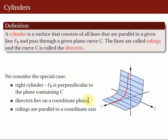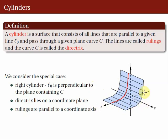In the following discussion, we only consider cases satisfying these conditions. First, the directrix lies on a coordinate plane. In this figure, the red curve lies on the xz coordinate plane. Another condition is that L0 is perpendicular to the plane containing C. L0 in this picture is the y-axis, and it is perpendicular to the xz plane which contains the directrix. If this condition is satisfied, then we have a right cylinder. The third condition is that the rulings are parallel to a coordinate axis, which follows since our fixed line L0 is the y-axis.